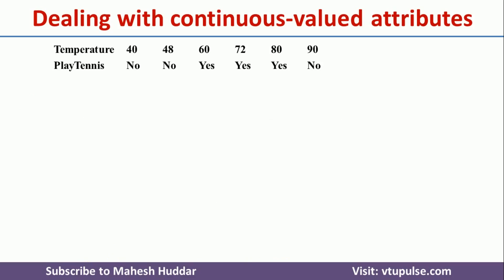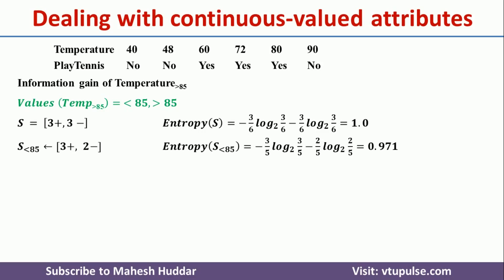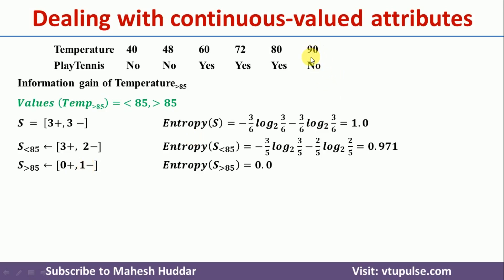Finally, we will find the information gain of the other threshold — temperature greater than 85 and less than 85. There are two possible values for this one. The entropy of the entire dataset is still 1.0 because we still have three positive and three negative examples. For less than 85, we have five examples — two negative and three positive — and the entropy of that subset is 0.971. For greater than 85, there is only one example, which is negative.